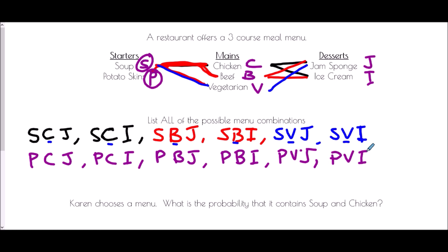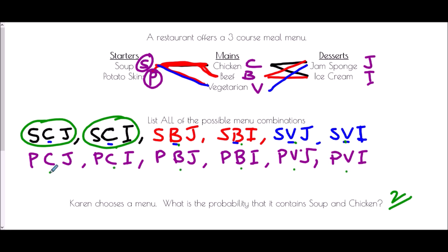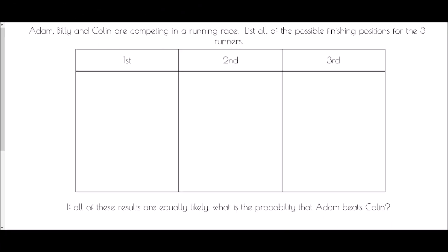We've now systematically listed all the different combinations. We're then told Karen chooses a menu — what is the probability it contains soup and chicken? Looking through the list, soup-chicken-jam sponge and soup-chicken-ice cream are the only two matches. All others have different combinations. The probability is 2 out of the total 12 combinations, which simplifies to 1/6.